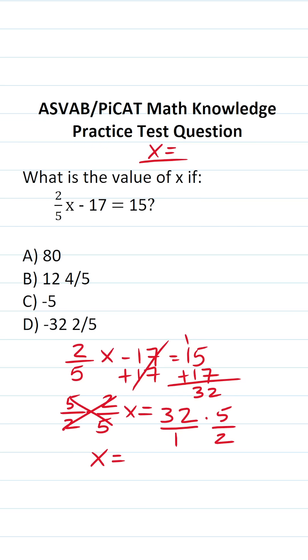You can cross-reduce if you want, but when you multiply fractions, you just multiply straight across. So this becomes 32 times 5 over 1 times 2. And I'm going to work that off to the side.